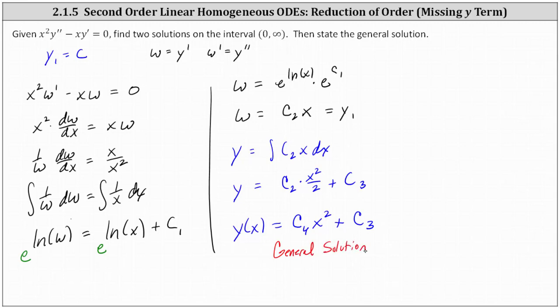Remember, if two solutions are linearly independent, then the linear combination of those two functions give us the general solution. So this c sub three is really the solution that we found at the beginning, y one equals c. And the second solution would be y sub two equals any constant times x squared. If we let the constant be equal to one, we can now say the second solution is y two equals x squared.